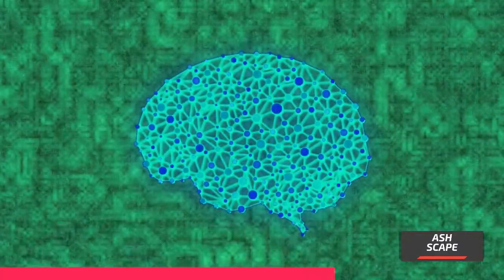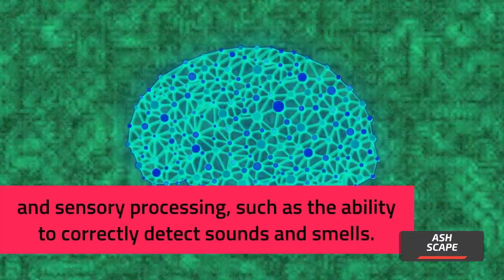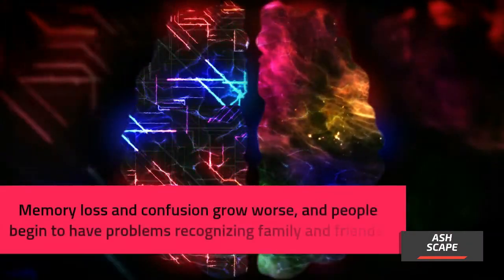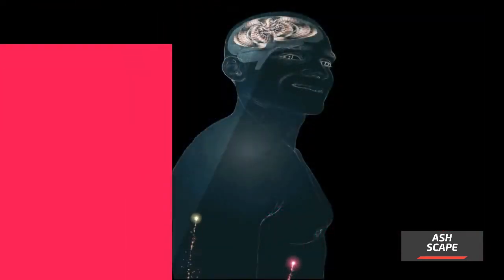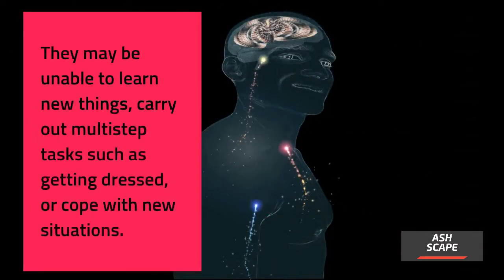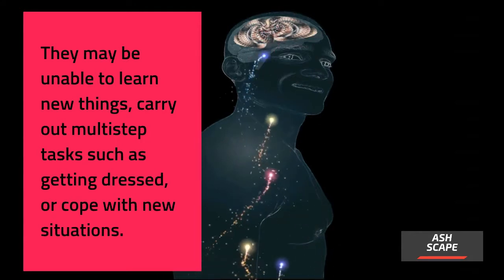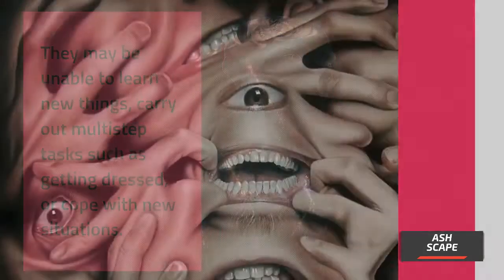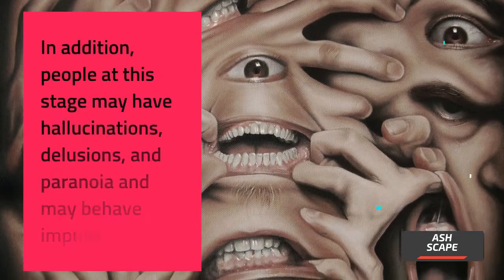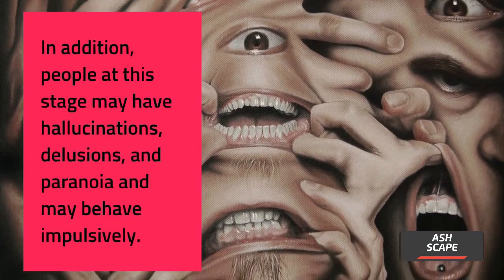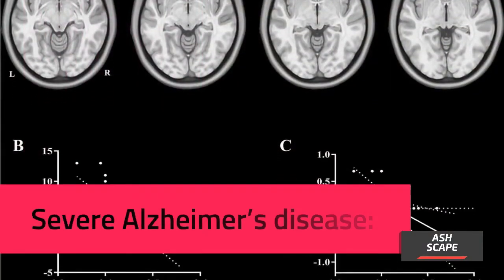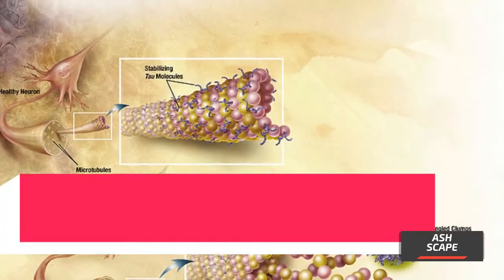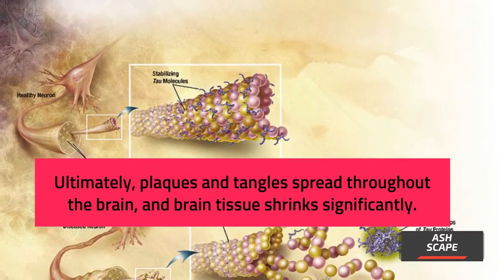In moderate Alzheimer's disease, damage occurs in areas of the brain that control language, reasoning, conscious thought, and sensory processing. Memory loss and confusion grow worse, and people begin to have problems recognizing family and friends. They may be unable to learn new things, carry out multi-step tasks such as getting dressed, or cope with new situations. People at this stage may also have hallucinations, delusions, and paranoia, and may behave impulsively.